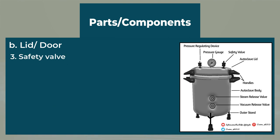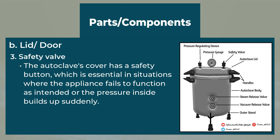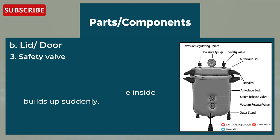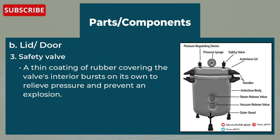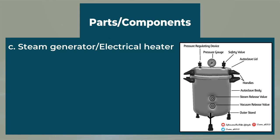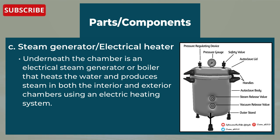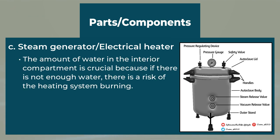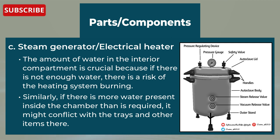The safety valve is another component on the autoclave's cover, essential in situations where the appliance fails to function as intended or the pressure builds up suddenly. A thin coating of rubber covering the valve's interior releases pressure and prevents an explosion. Underneath the chamber is an electrical steam generator or boiler that heats the water and produces steam in both the interior and exterior chambers. The amount of water in the interior compartment is crucial — if there is not enough water, there is a risk of the heating system burning, and if there is too much water, it might conflict with the trays and other items inside.